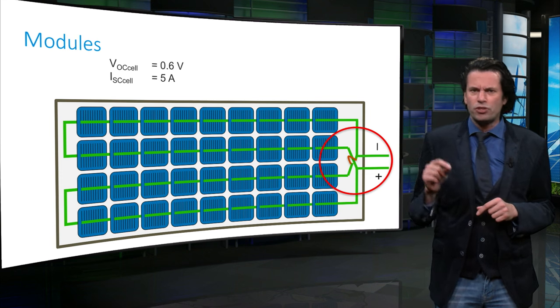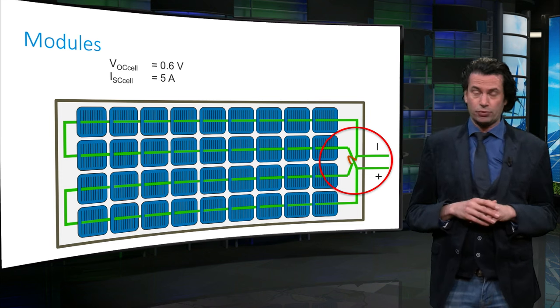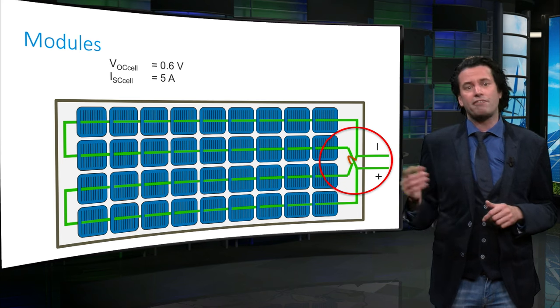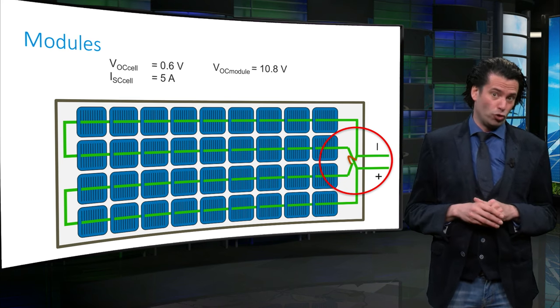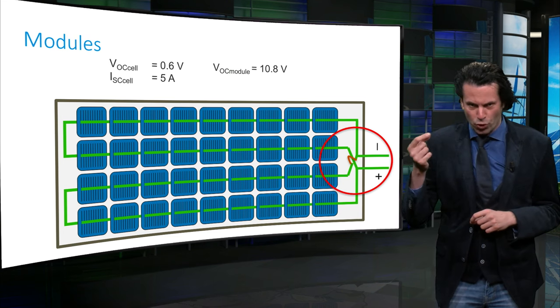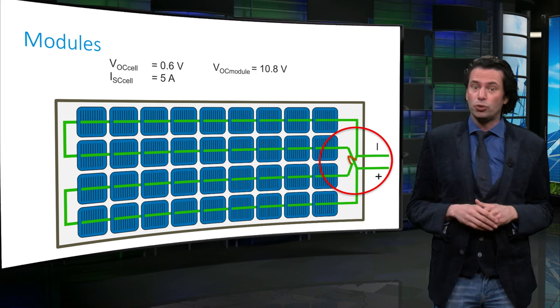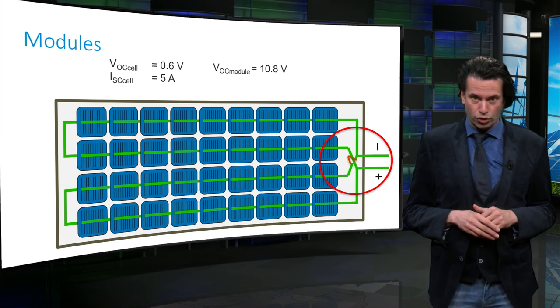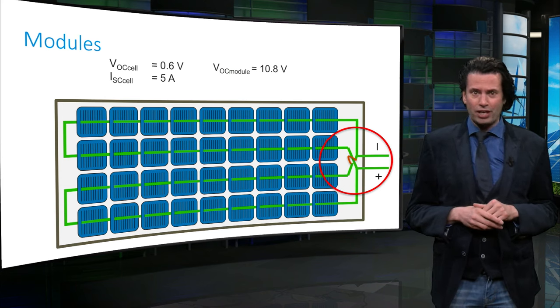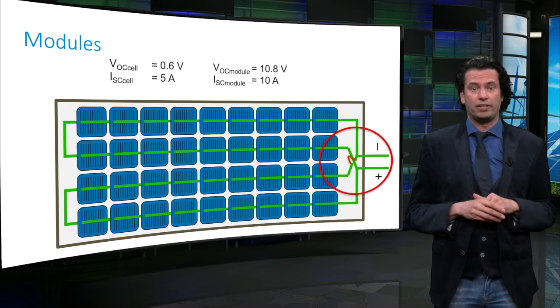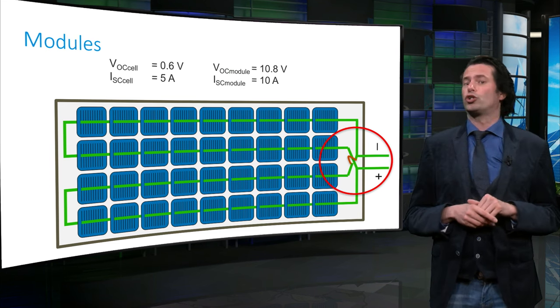This gives us 10.8V for the open-circuit voltage. As we have two rows in parallel, we have to multiply the short-circuit current by 2 to get the module short-circuit current. If we do this, we get 10A for the module short-circuit current.